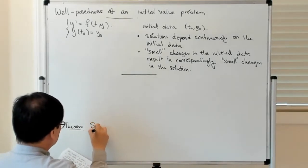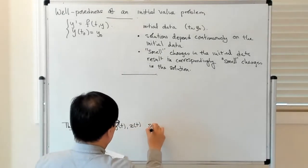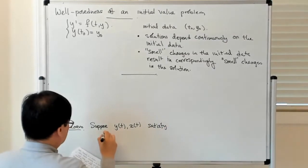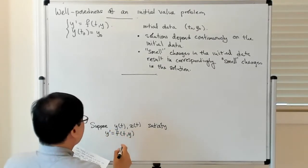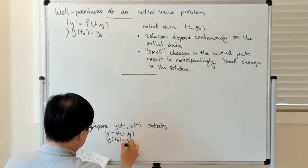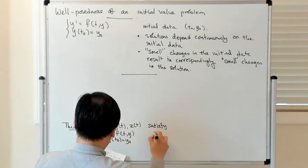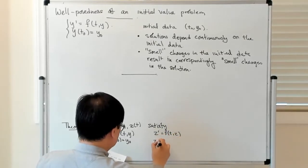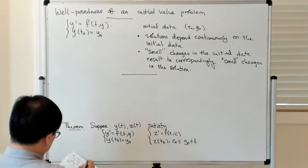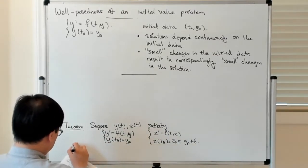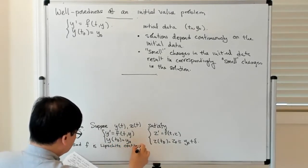The theorem is as follows: suppose you have two solutions, y(t) and z(t), which satisfy the initial value problem for slightly different data. y' = f(t, y) with y(t₀) = y₀, and z' = f(t, z) with z(t₀) = z₀, where z₀ is defined to be y₀ plus some small change delta.